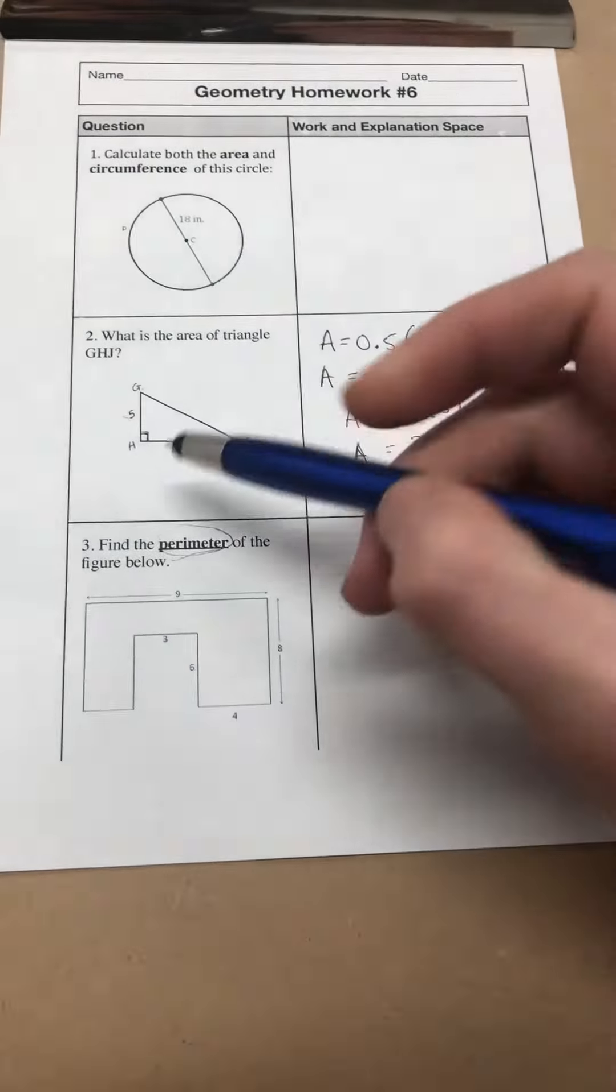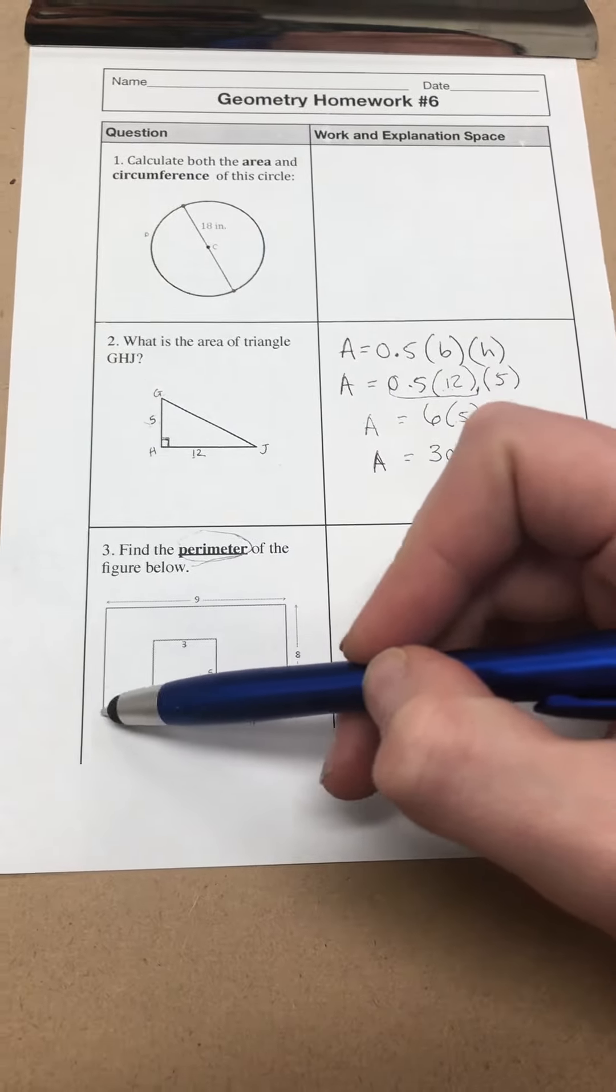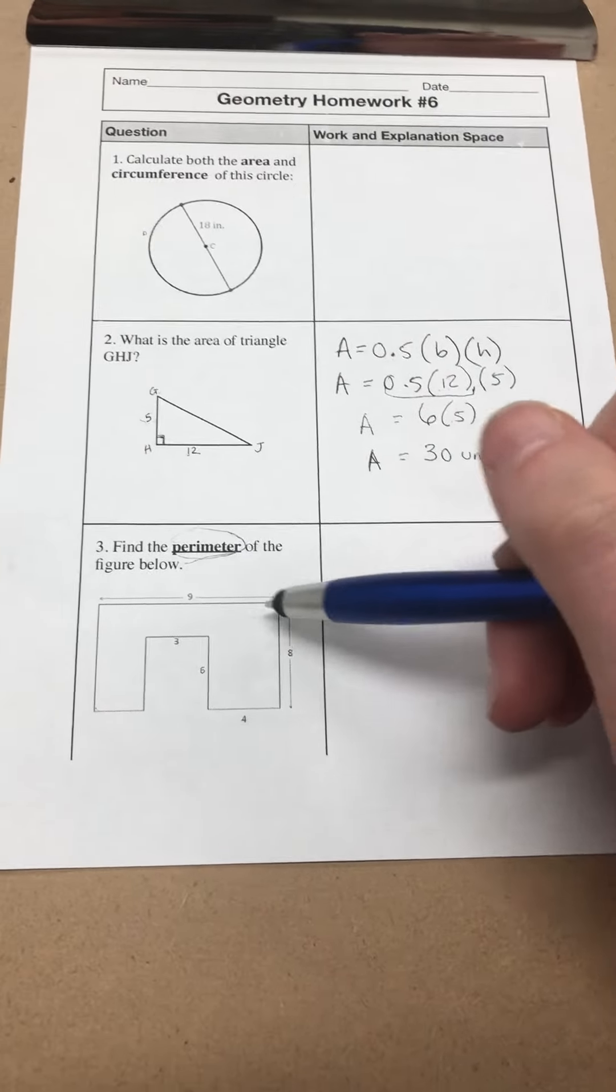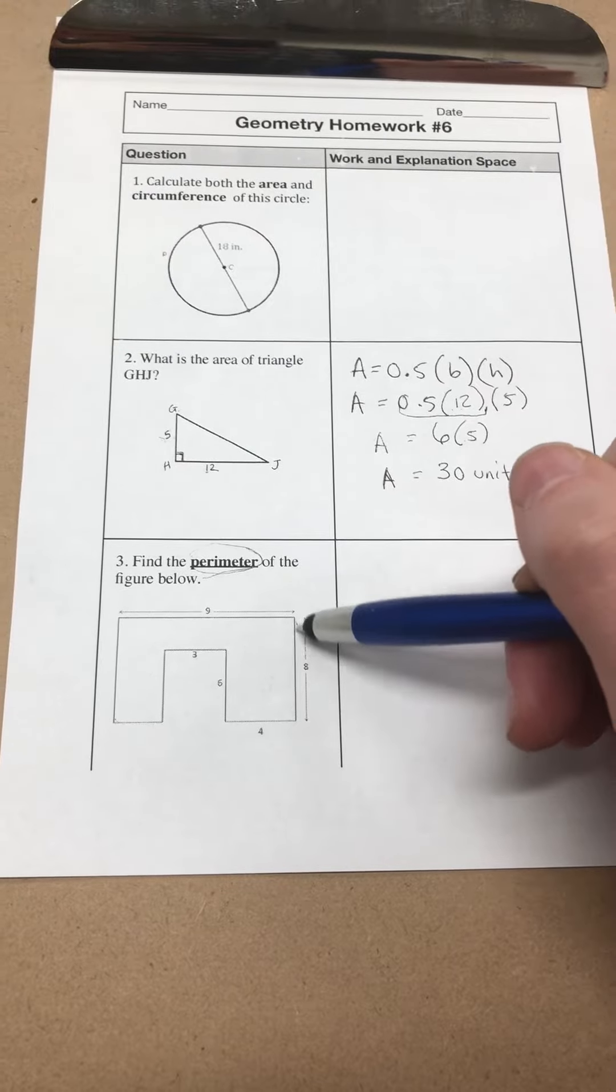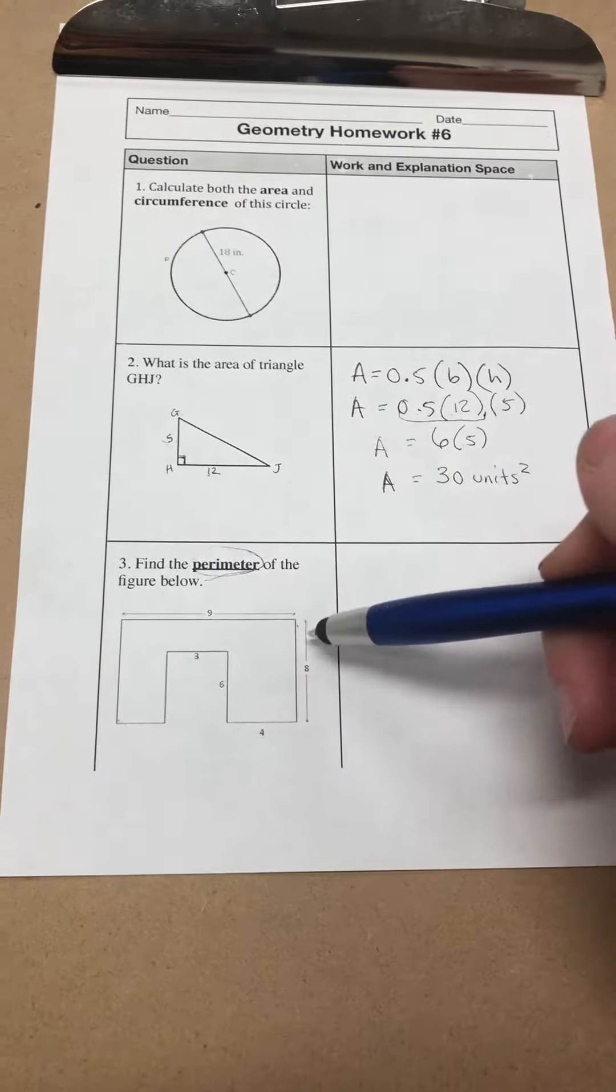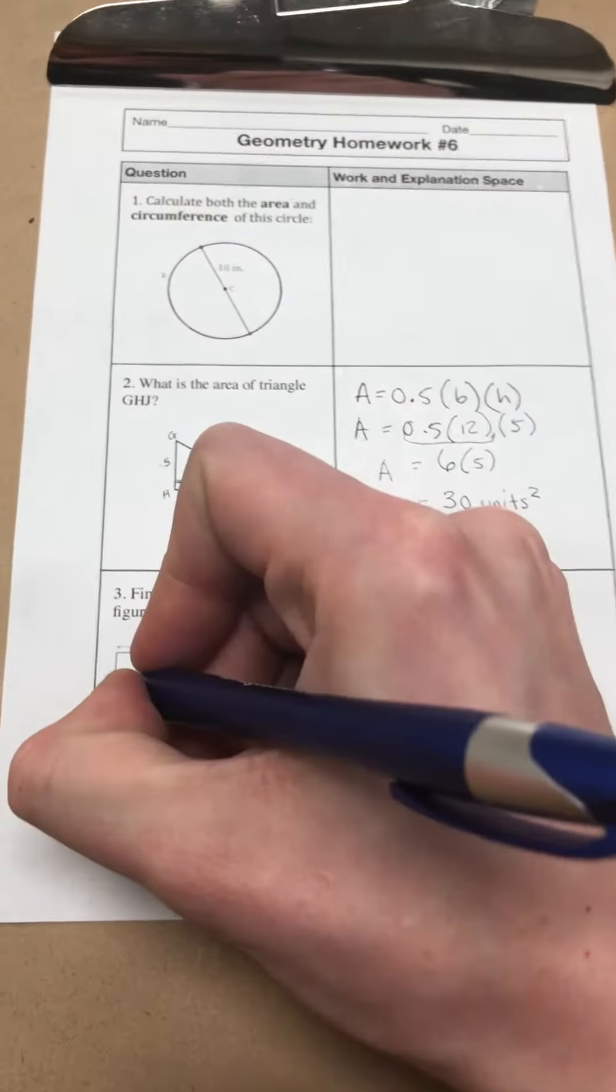So once we figure out these missing sides, this one, this one, and this one, then we would need to add everything up. So in this case, we have eight over here. We see that we have a side that's exactly the same over here. So we automatically know that this side is also going to be eight.